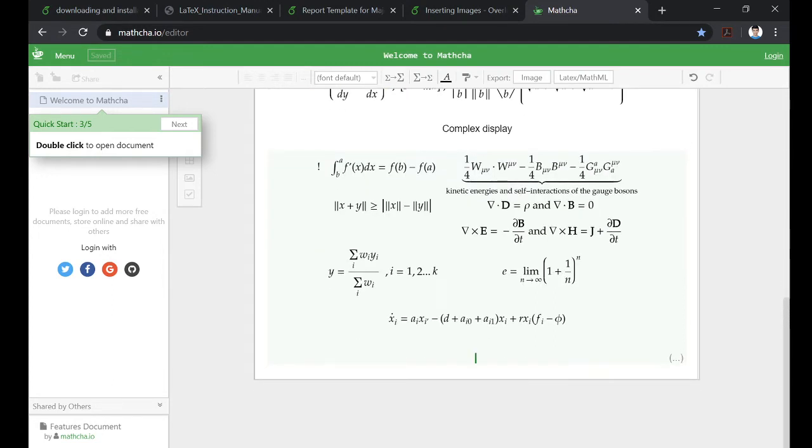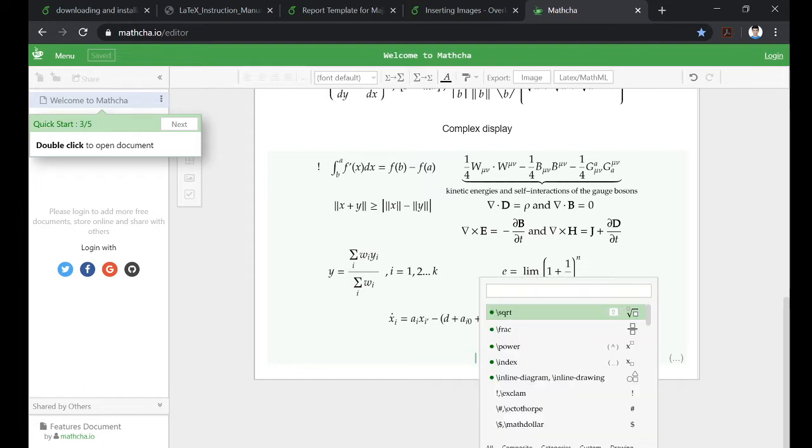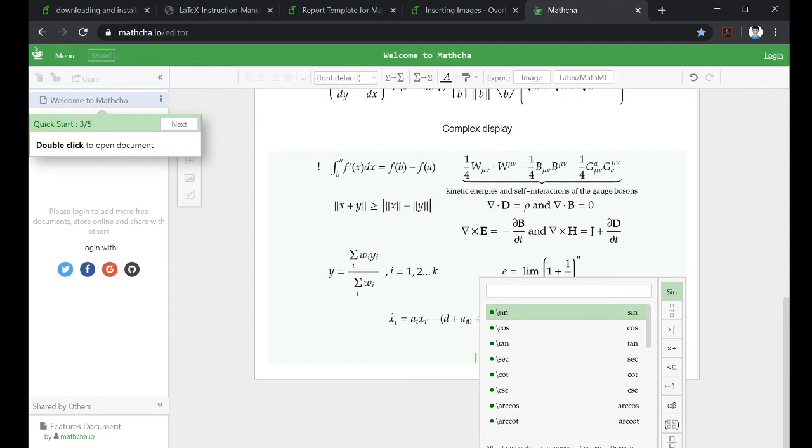Some things to remember while typing equations is that you put this forward slash. When you type this slash, automatically this window will come and there are these symbols available here so you can use them to create an equation. There are composite symbols, categories, sine cosine tan trigonometric categories, fraction categories, summation, product, all your mathematical operation symbols.